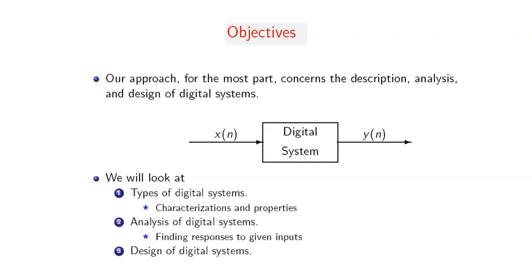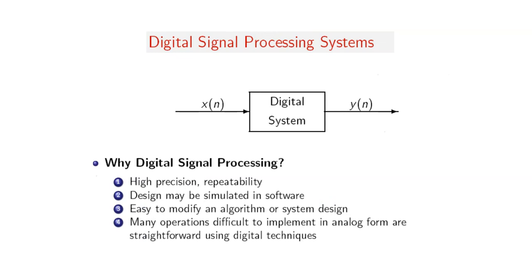Looking at the types of digital systems, we can classify our digital system by type, by analysis, or by design. For types of digital signal systems, we look at characterization and properties. For analysis, we find responses to given inputs. For design of digital systems, we create specific systems such as digital filters.